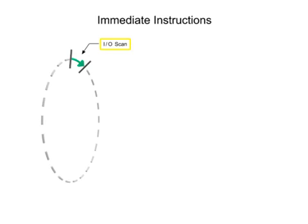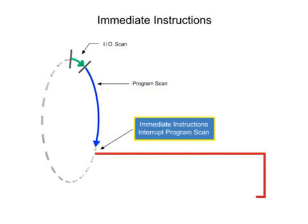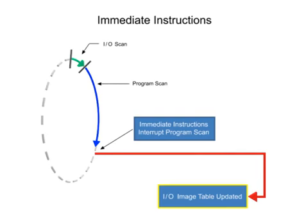For time-critical applications, immediate input and immediate output instructions are used to interrupt the normal program scan to update the current input or output image table.